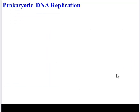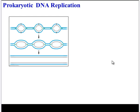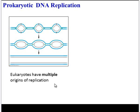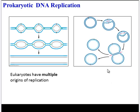A quick note about prokaryotic DNA replication: in eukaryotes, because there's so much DNA, replication starts at multiple points along the chromosomes — there are multiple origins of replication, so it gets done faster. But prokaryotes have less DNA, and they have only one origin of replication.